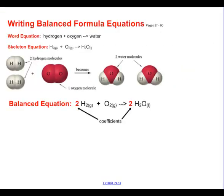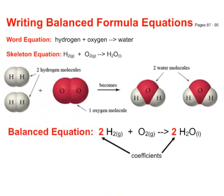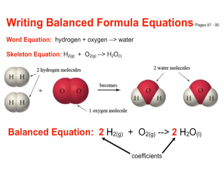Word equations aren't quite enough, because what about the conservation of matter as described by Antoine Lavoisier? A word equation like hydrogen plus oxygen makes water doesn't give us an idea of the count of atoms involved. So we resort to a skeleton equation. We can look at the chemical formulas: H2 gas combines with O2 gas to make H2O. Now we can actually see what atoms are involved.